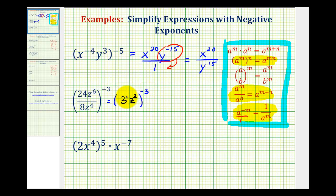And now this 3 has an exponent of 1 and the z has an exponent of 2. And since we have powers to powers, we're going to multiply the exponents. So we'll have 3 to the power of 1 times negative 3, that's negative 3, and then z to the power of 2 times negative 3, that's negative 6.